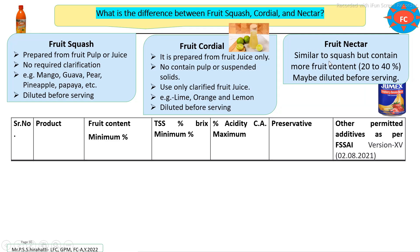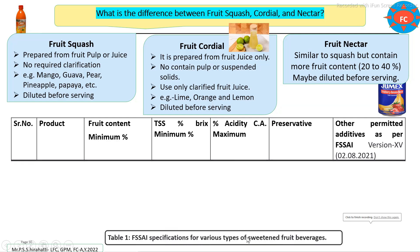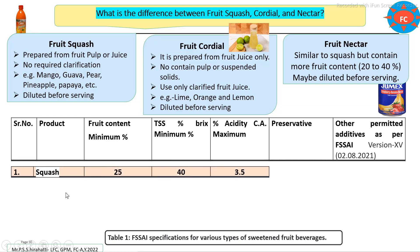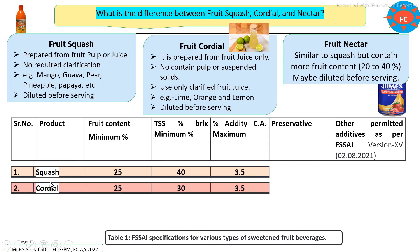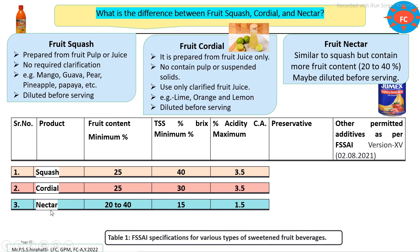Nectar is similar to squash but contains more fruit content — about 20 to 40 percent — and may be diluted or directly served depending on the type of fruit. Looking at the specification table: for fruit squash, minimum fruit content is 25%, final brix minimum 40%, and maximum acidity 3.5%. For cordials (lime, orange, lemon), minimum fruit content is 25%, final brix 30%, and maximum acidity 3.5%. For nectar, fruit content varies from 20 to 40% depending on the fruit type, minimum TSS requirement is 15%, and acidity is 1.5%.